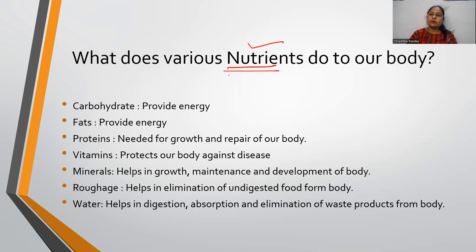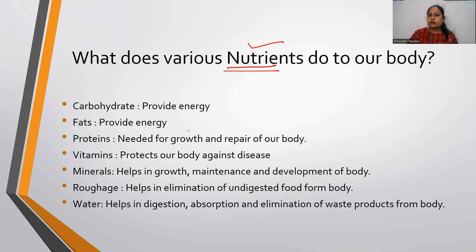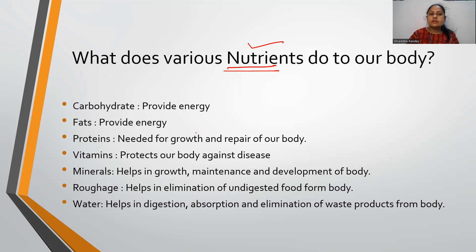What do nutrients do for our body? If we divide food components into three groups: there are energy-giving foods, body-building foods, and protective foods. These are the different categories of food.